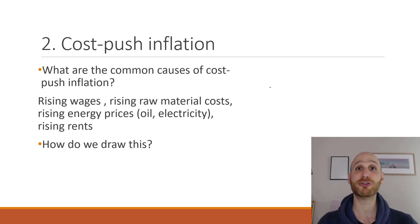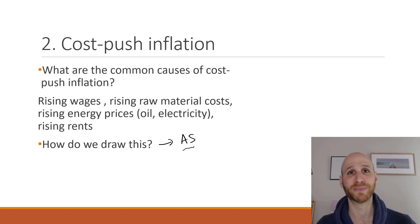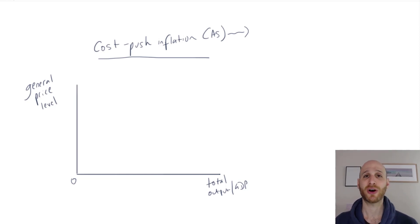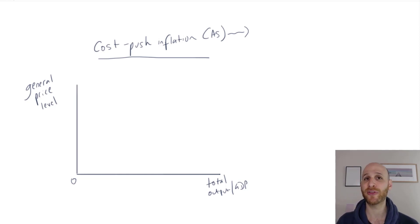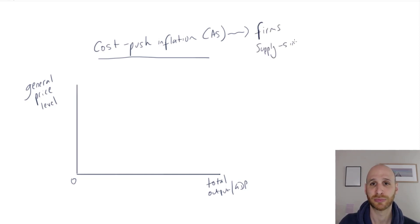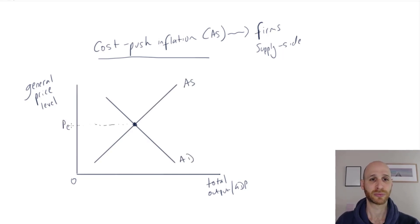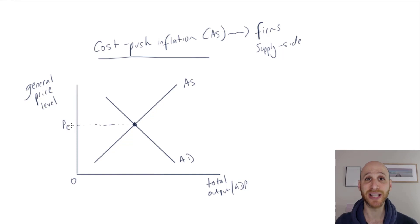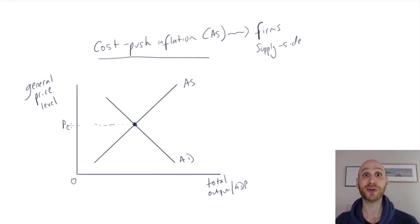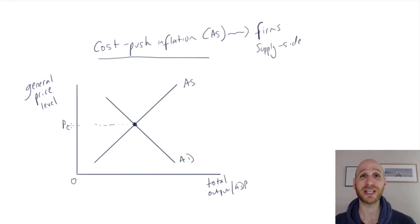Let's draw cost-push inflation. We're looking at aggregate supply from the producers' perspective. If production costs go up, firms are going to produce less because it's more expensive to make goods and services. So aggregate supply decreases — it shifts to the left — which actually increases prices.